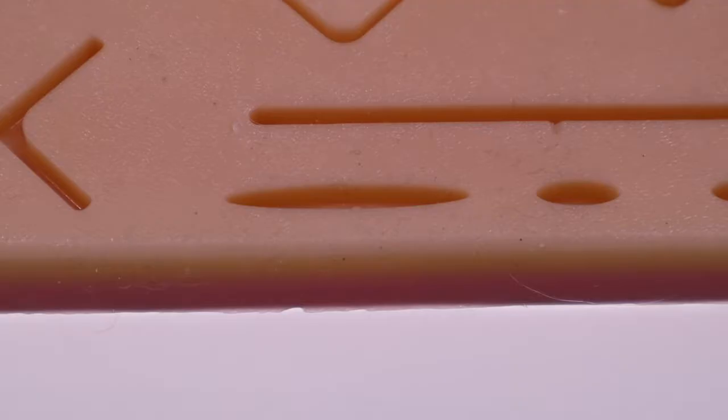All right folks, on this segment I'm going to introduce and demonstrate the subcuticular running stitch. This is a stitch that's frequently used for aesthetic closures, which is important on exposed skin wounds such as the face. It can also be utilized in folks that tend to form keloid scarring as it will generally have a better aesthetic result.